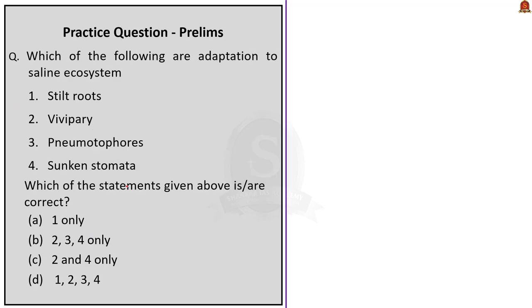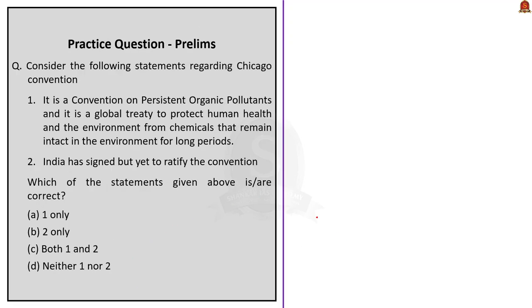Now let us move on to the second question. Which of the following are adaptations to a saline ecosystem? 1. Stilt roots, 2. Vivipary, 3. Pneumatophores, 4. Sunken stomata. As we saw in the discussion, all four are adaptations to a saline ecosystem. So the answer is D — 1, 2, 3 and 4.